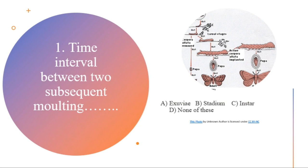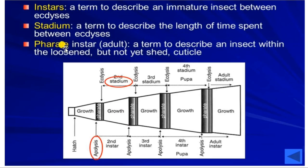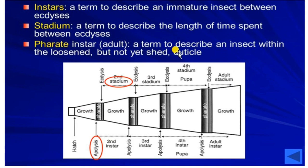We must also remember the term pharate, which is the condition of the adult insect — mostly used to describe an insect within the loosened but not yet shed cuticle. When the cuticle is not yet shed it is called the pharate condition, which occurs mostly after molting before the old cuticle is shed, especially in the last instar when the insect is going to become an adult.